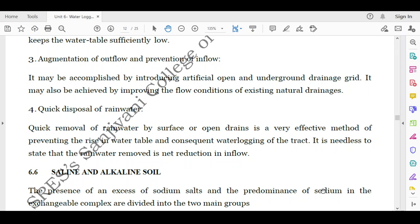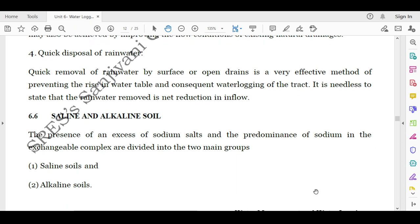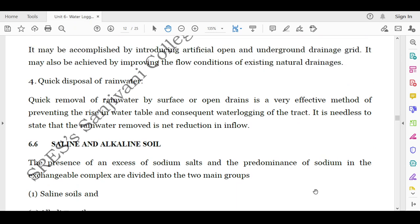Then quick disposal of rainwater. Quick removal of rainwater by surface or open drains is a very effective method of preventing the rise in water table and consequent water logging of the tract. It is needless to state that the rainwater removed is net reduction in the inflow. So as far as possible, we have to avoid the excess inflow.